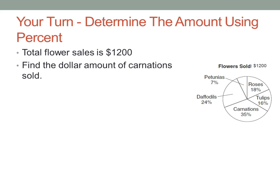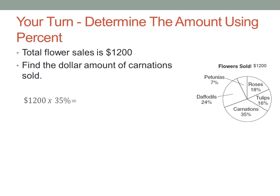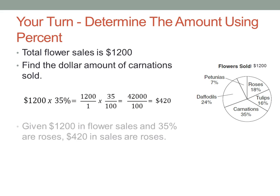Now it's your turn. Using the same flower data — $1,200 total — find the total amount of carnations sold. Pause here and come back with the answer. You should have done $1,200 times 35%. Making them fractions and multiplying across gives $420. So $420 in sales for carnations. (Note: the previous slide incorrectly said roses — that should say carnations.)